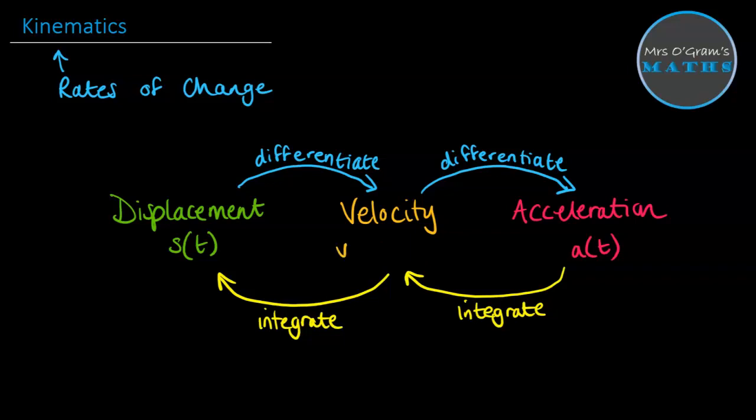So as a quick little example, let's say we had a velocity function of 24 minus 10t meters per second. Then we could use that to differentiate to get the acceleration.